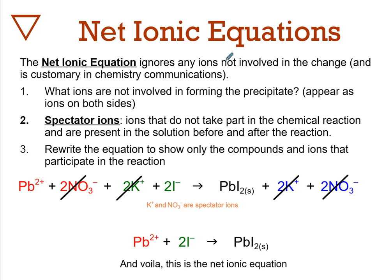The net ionic equation ignores any ions not involved in the change. This is the real way we write reactions with spectator ions. What ions are not involved in forming the precipitate? Looking at lead two iodide as our precipitate, you need iodide and lead. Nitrate appears on both sides as an ion - it's not doing anything. Potassium, same thing. We can cross them out and simplify to the net ionic equation for the formation of lead iodide.